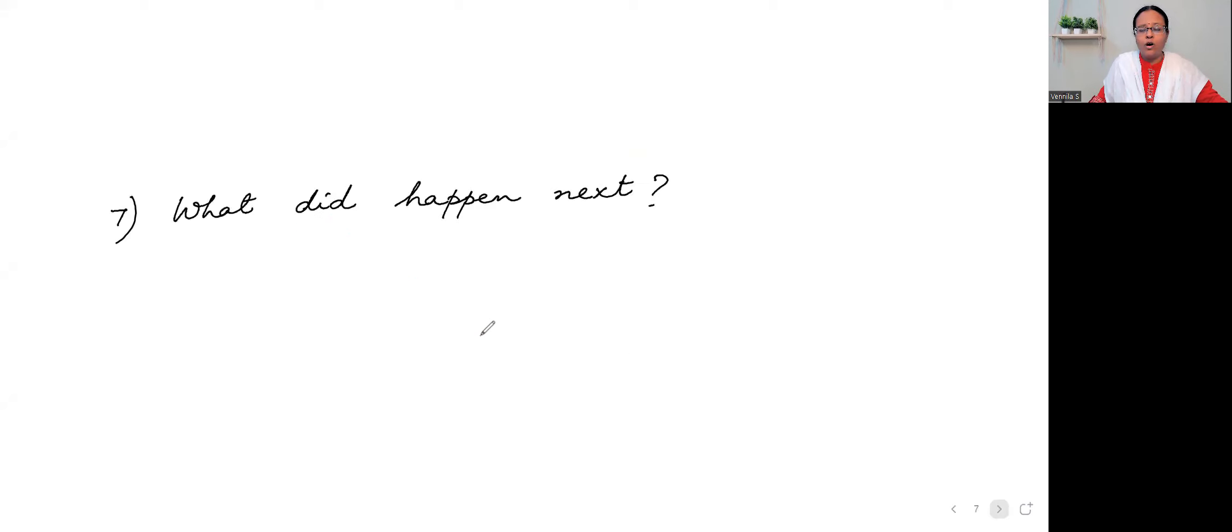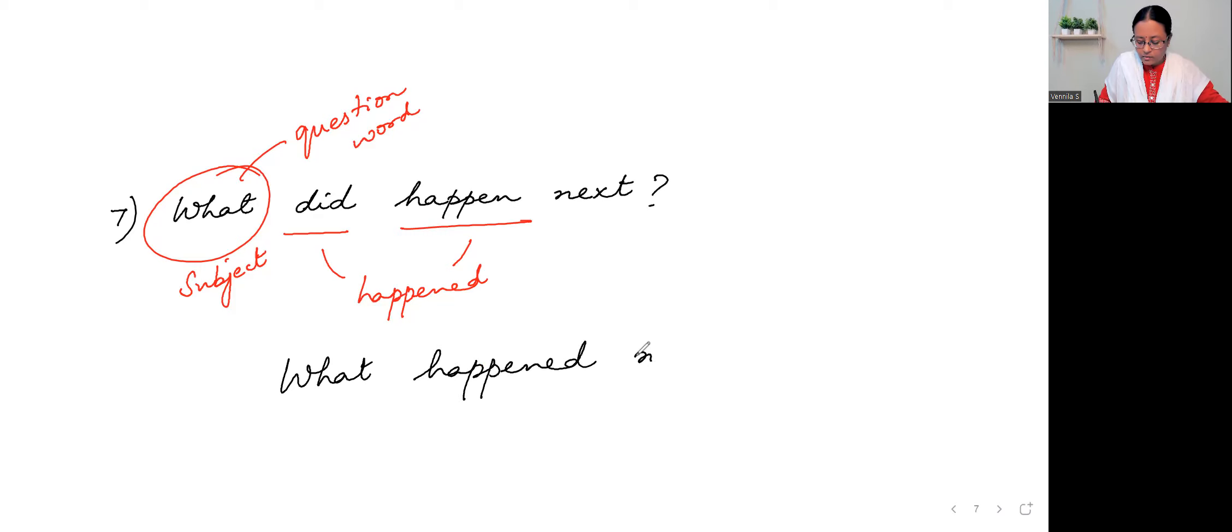Number seven, what did happen next? Now did happen, the form correct, correct, but what? What is the subject, what. Question word, question word subject. So let me rewrite the question. What happened next? This is right. Happened, the past tense. Okay. The last question.